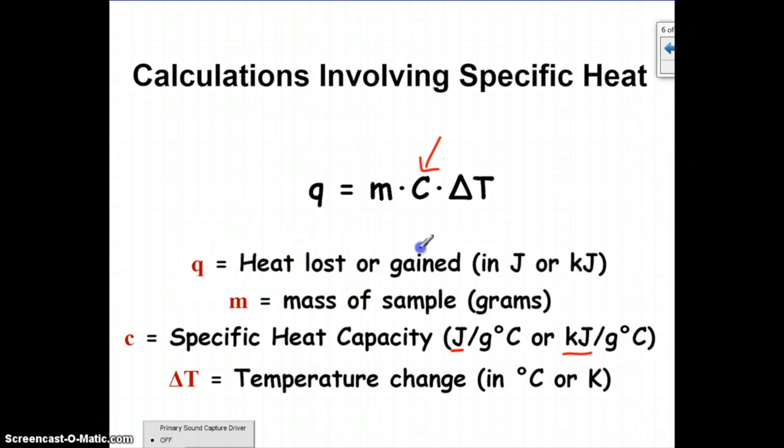Based on what your specific heat is in will determine what your unit for Q is. Q is the energy or the heat that you lose or gain, and based on what your specific heat's in, it will be either in joules or kilojoules. M is mass in grams, and then delta T is the temperature change, and it can be in degrees Celsius or in Kelvin.